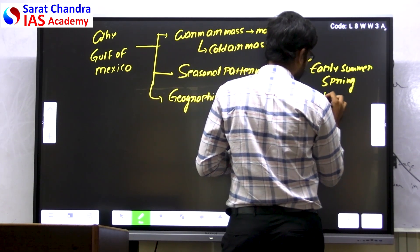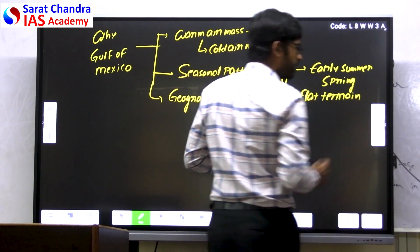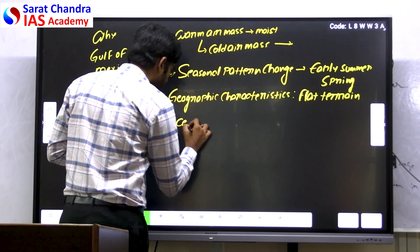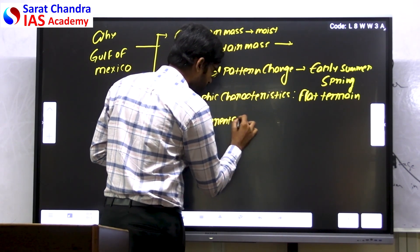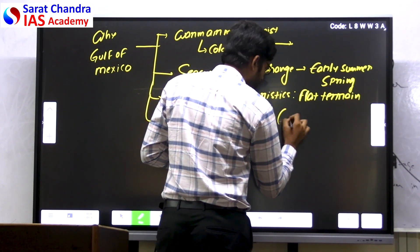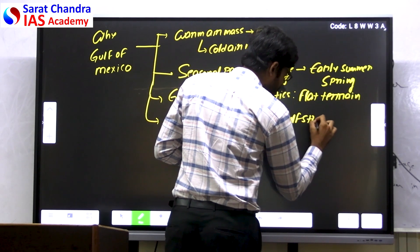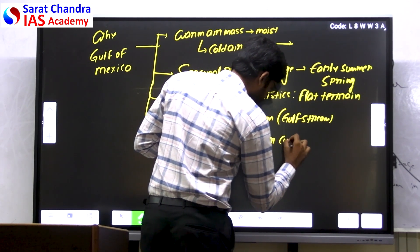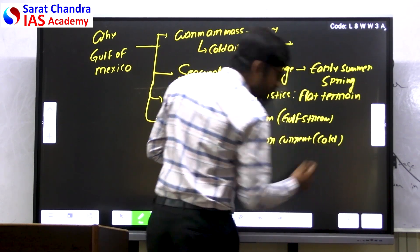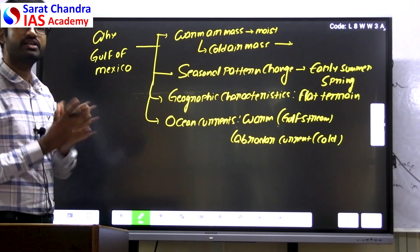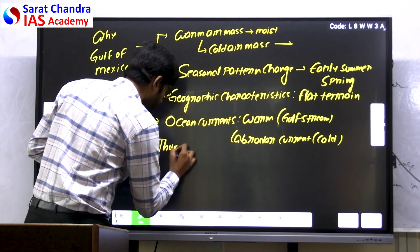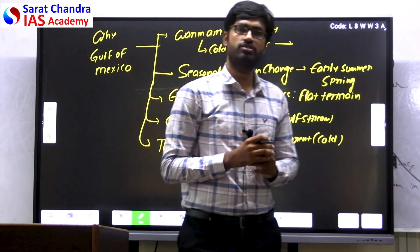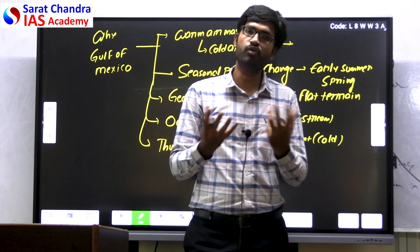The third factor is the geographical characteristics of the region — it has flat terrain, which makes it easy for the movement of warm air mass. The next factor is the presence of ocean currents: the warm Gulf Stream fuels the warm air mass, while the cold Labrador current brings cold air. When these two currents' air masses meet, it creates tornado-like conditions. Active thunderstorms in this region can also trigger the twisters.